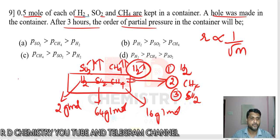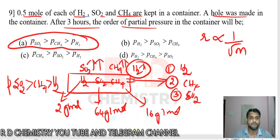Sulfur dioxide will be more now. So partial pressure of sulfur dioxide is more compared to CH4 and compared to hydrogen. Therefore, answer is option number B. Lighter gas moves out faster from the vessel, heavier gas will remain. So A is the answer.